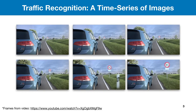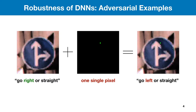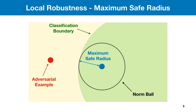In other words, the input is a time series of dynamic images. However, we know that neural networks are vulnerable to adversarial examples. For instance, by applying just one single pixel, the traffic sign 'go right or straight' is misclassified into 'go left or straight.' Therefore, we work on the robustness of deep neural networks.